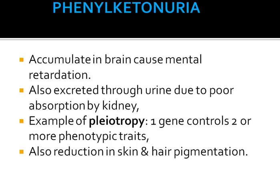Phenylketonuria is an example of Pleiotropy. In Pleiotropy, one gene controls two or more phenotypic traits — that is, a single gene has multiple effects. In Phenylketonuria, there is also a reduction in skin and hair pigmentation.